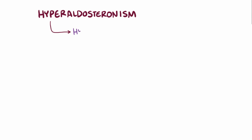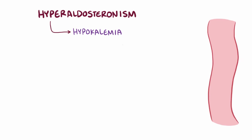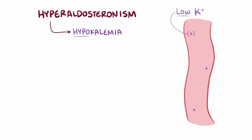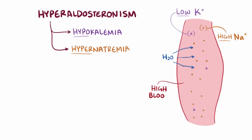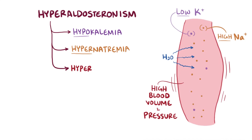Hyperaldosteronism leads to hypokalemia, which is low potassium levels in the blood, as well as hypernatremia, meaning high sodium levels in the blood. With more sodium in the blood, water moves into the blood vessels, which results in a high blood volume and high blood pressure, or hypertension.